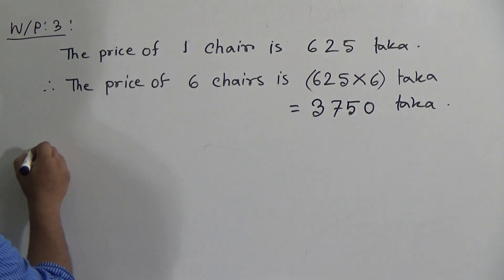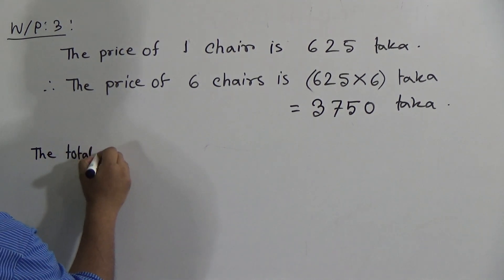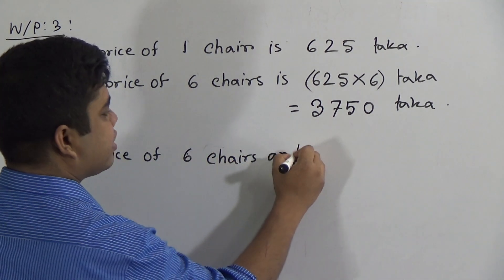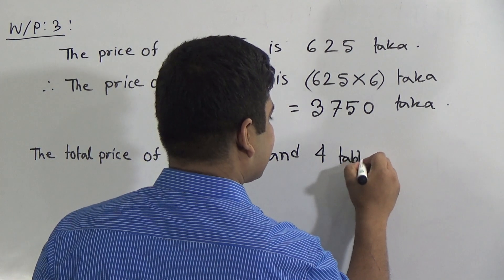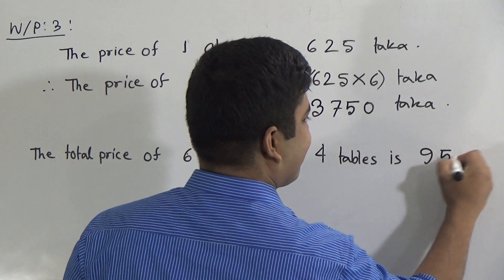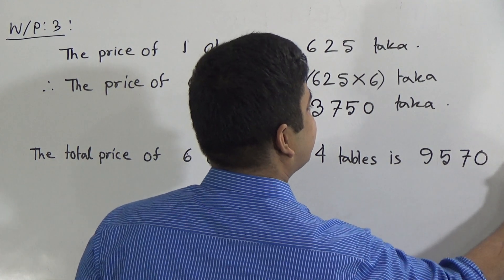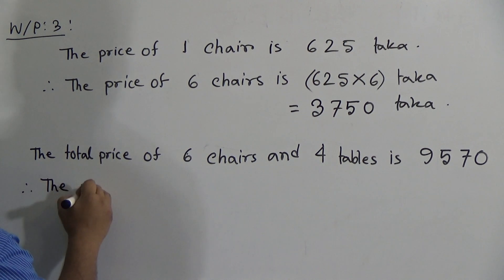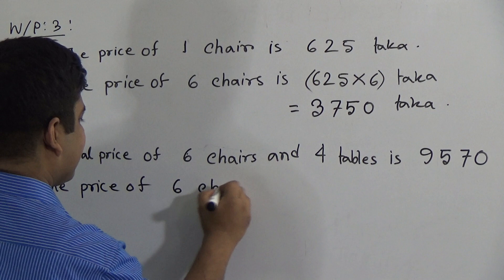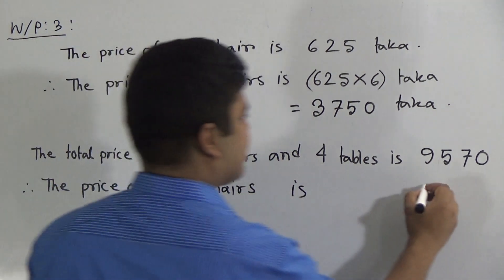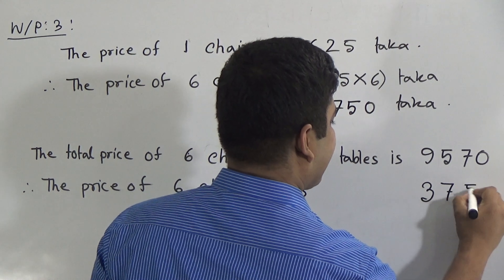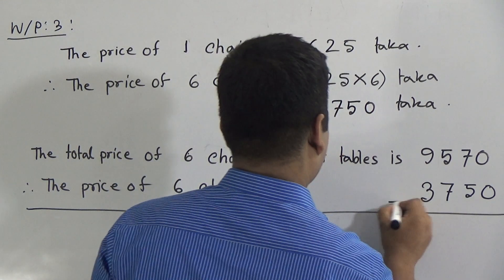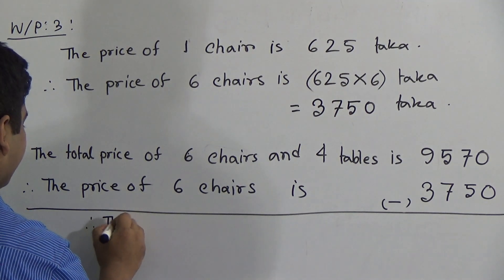Now we shall write the total price. The total price of 6 chairs and 4 tables is 9570 taka. Now here we write the price of 6 chairs. The price of 6 chairs is 3750 taka. After that, we do subtraction.